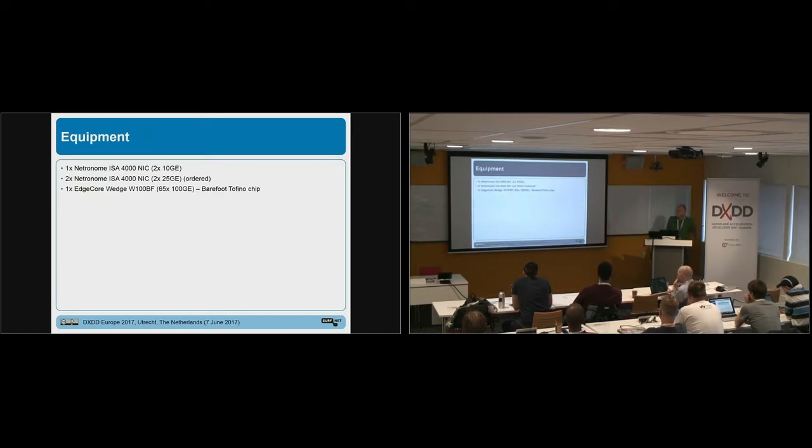So what we have at the moment in our testbed, we have a Netronome CX NIC. We just ordered two additional NICs. The one we have is a 2x10 port NIC. We just ordered 2x25 NIC. And as I saw it on the introduction slide, we also have this EdgeCore wedge switch. It's a barefoot Tofino P4 switch inside it.